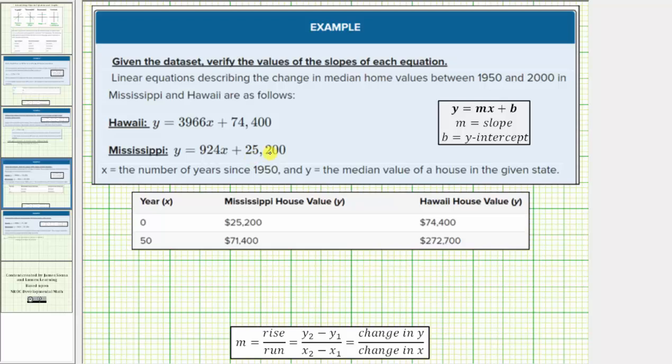Notice how both equations are in slope intercept form, which is the form y equals mx plus b, where m is the slope and b is the vertical or y-intercept. So notice how for the equation for Hawaii the slope is equal to 3966, and for Mississippi the slope is equal to 924.